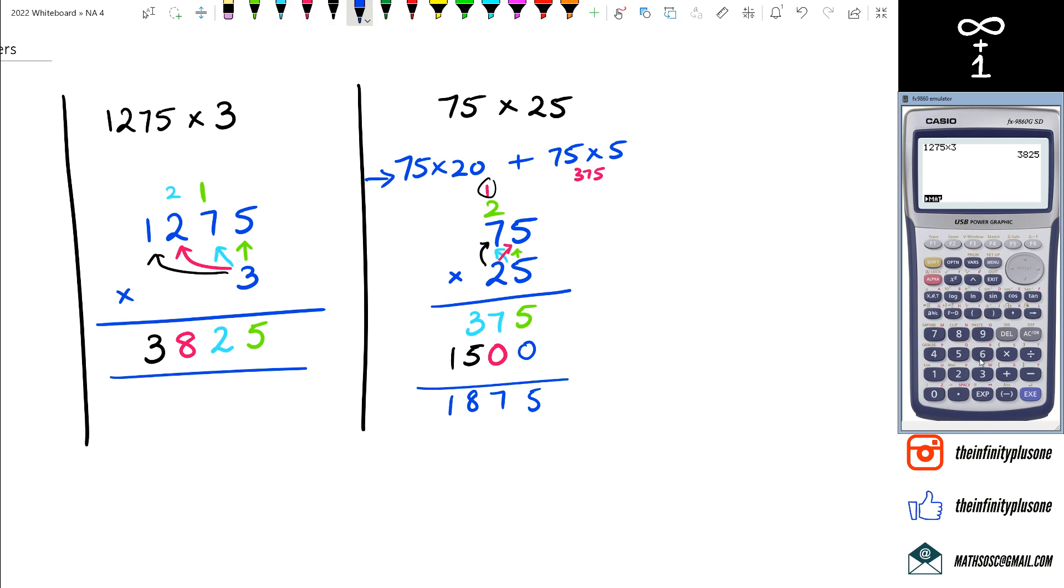So if we add it all up, we're going to get 5, 7, 8, 1. And if you were to do this separately, right? So if you were to do 75 times 20, we don't really worry about the 0. Like we can put the 0 first and then 75 times 2.